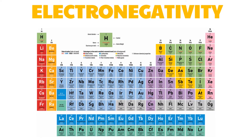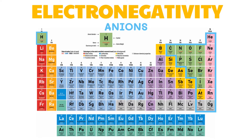Generally, nonmetals are the ones that tend to gain electrons and become negatively charged ions. They are called anions. When atoms gain electrons in their outermost shell, the number of their negatively charged electrons exceeds those of the positively charged protons. Thus, they carry a negative charge.